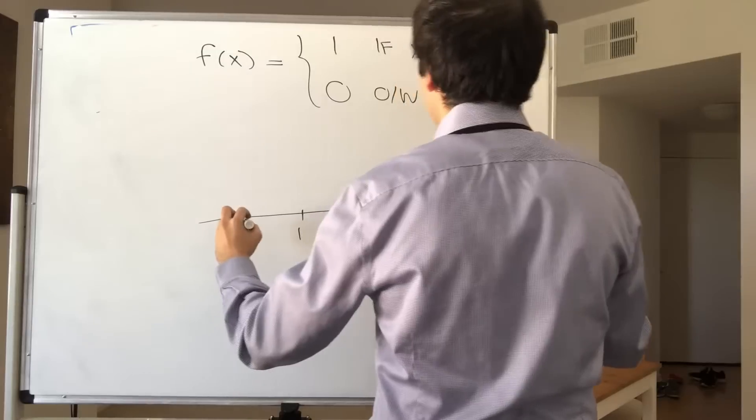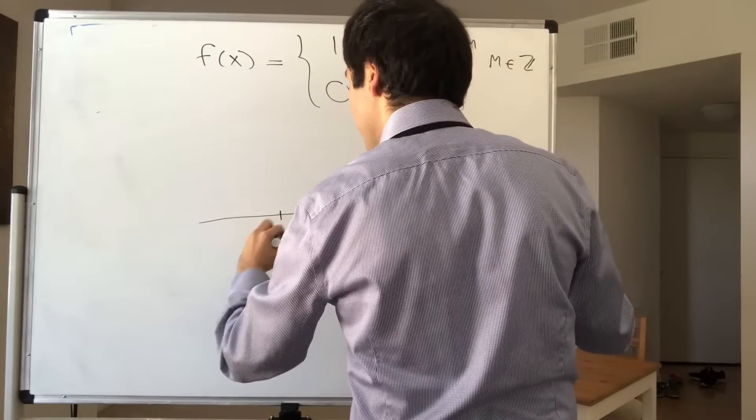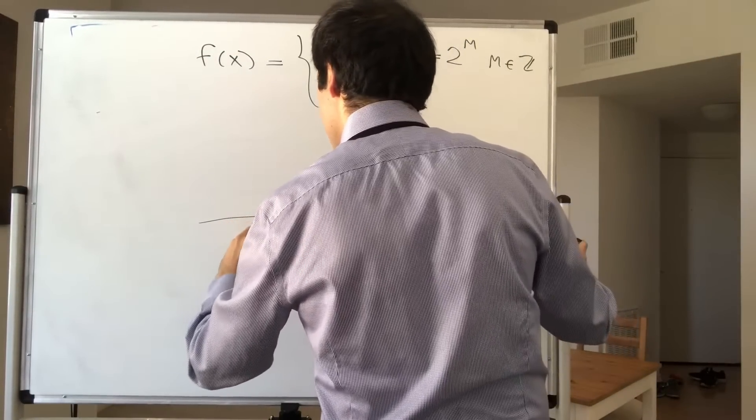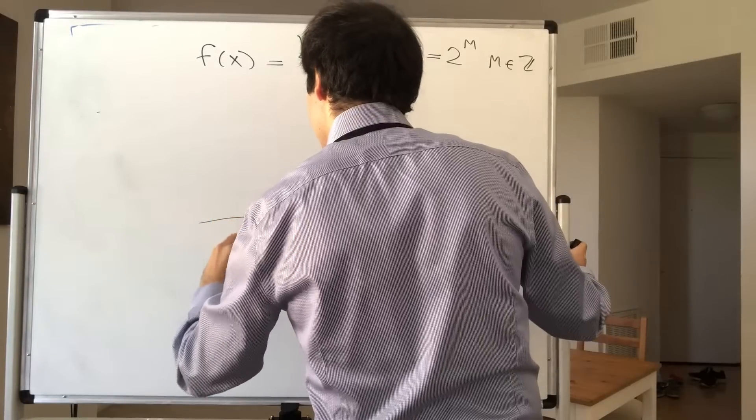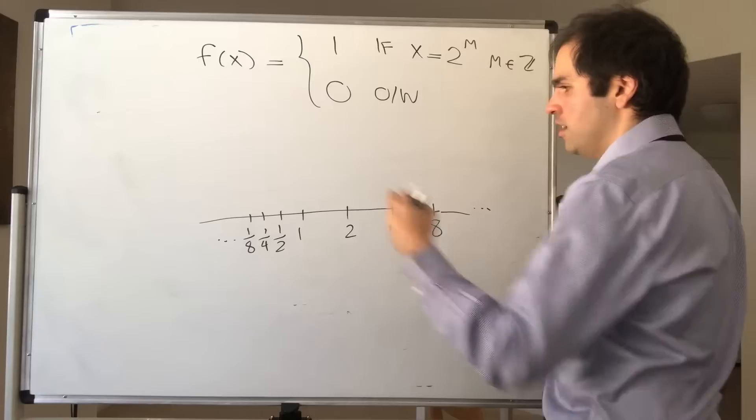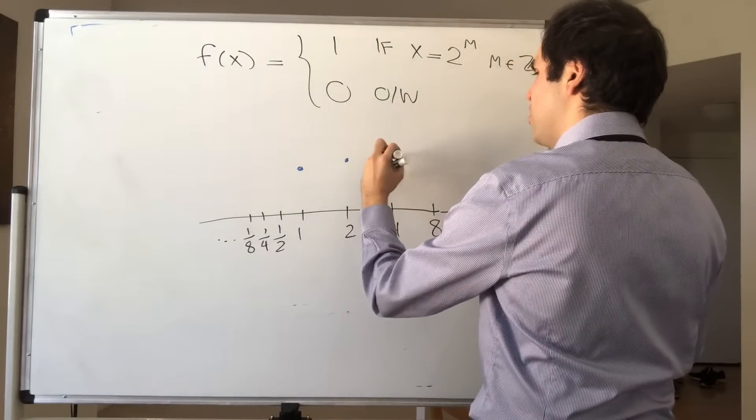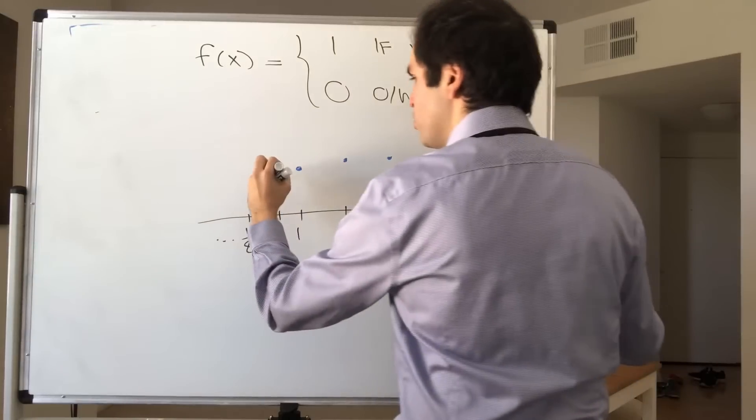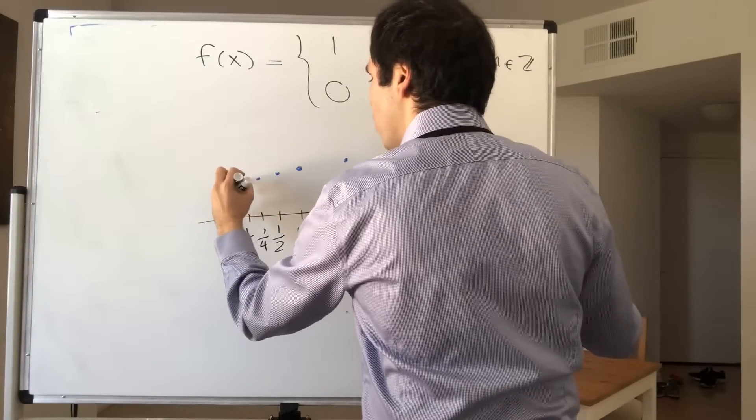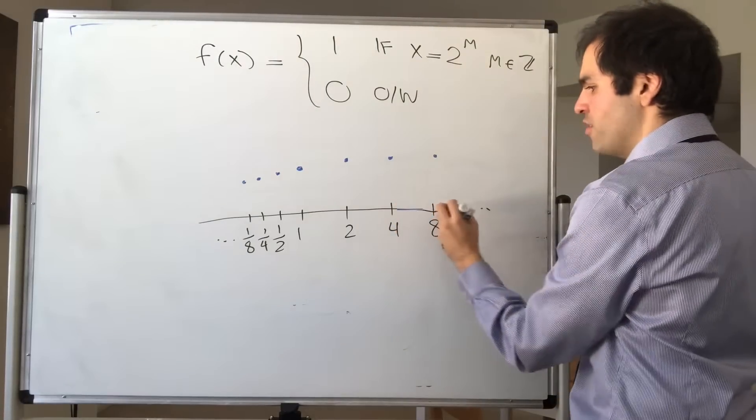And then, on the other hand, you also have half, a quarter, an eighth, and so on. So just a function that is 1 at 1, at 2, at 4, at 8, but also at one-half, one-quarter, one-eighth, et cetera, and then 0 everywhere else.